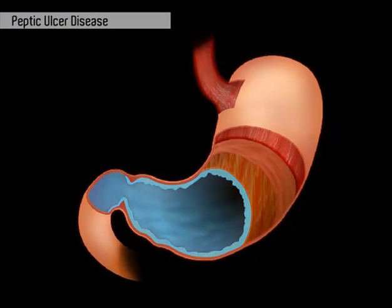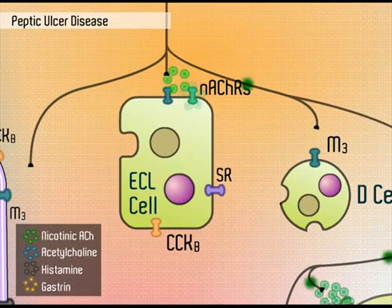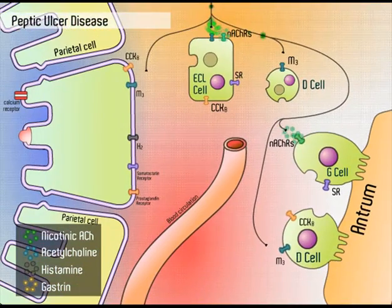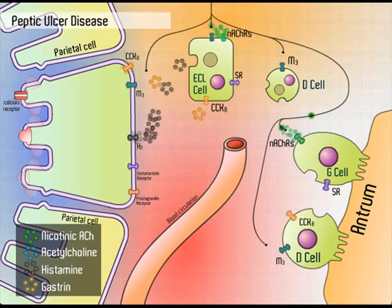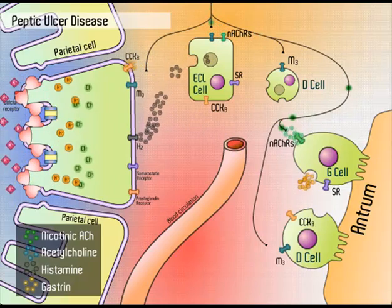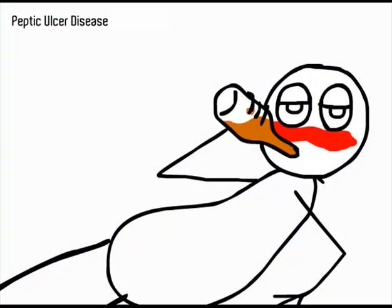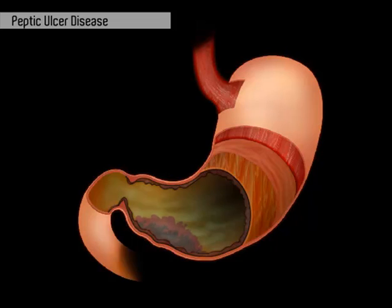Nicotine in cigarettes increases parasympathetic nerve activity to the GI tract by activating nicotinic receptors at the synapse. Increased stimulation of enterochromaffin-like cells and G-cells stimulates release of more histamine and gastrin, further increasing gastric juice acidity. Stress is proven to cause excessive production of gastric acid and delay healing of peptic ulcers. Alcohol can irritate and erode the mucous lining of the stomach and, like caffeine, increases the amount of stomach acid produced.